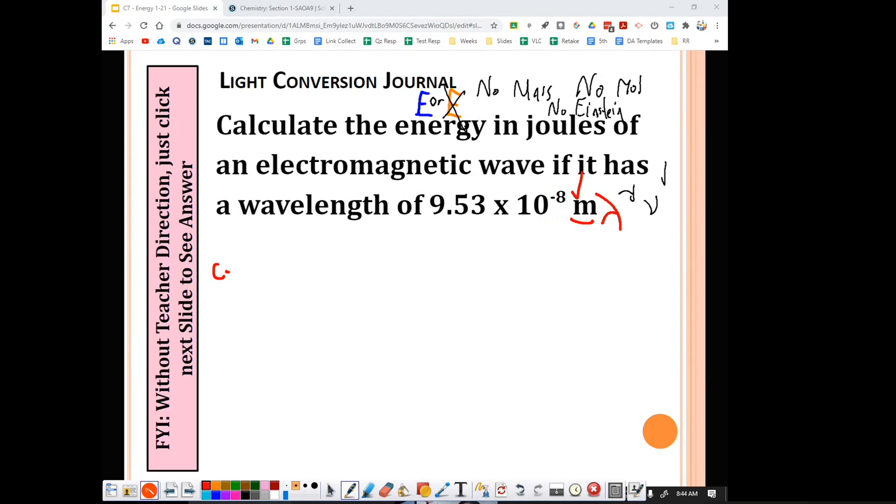I start with my wave equation. C equals wavelength times frequency, except what I want is frequency. So this is going to become, I'm going to alter it. I'm going to divide both sides by wavelength so that frequency is by itself, and this is going to give me the equation I'm really going to use, which is frequency is equal to C over wavelength like so.